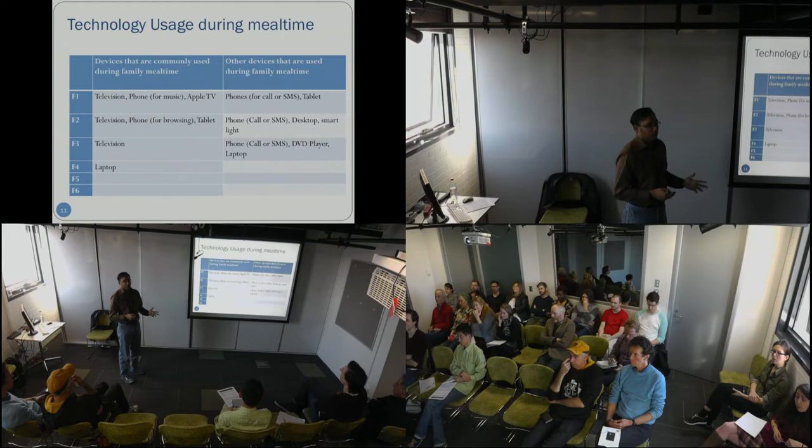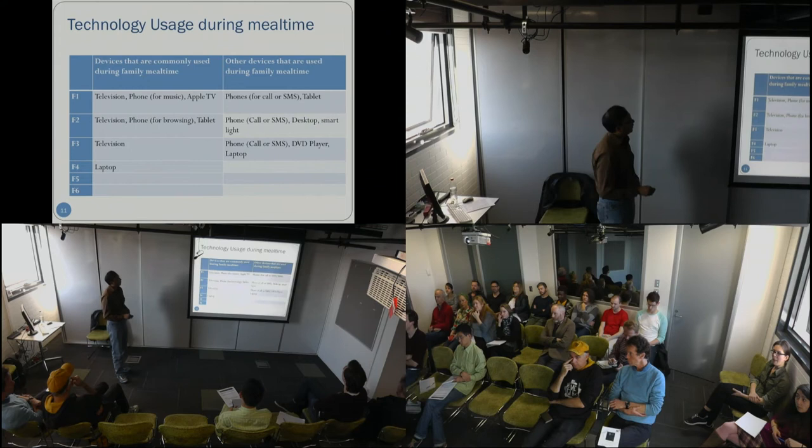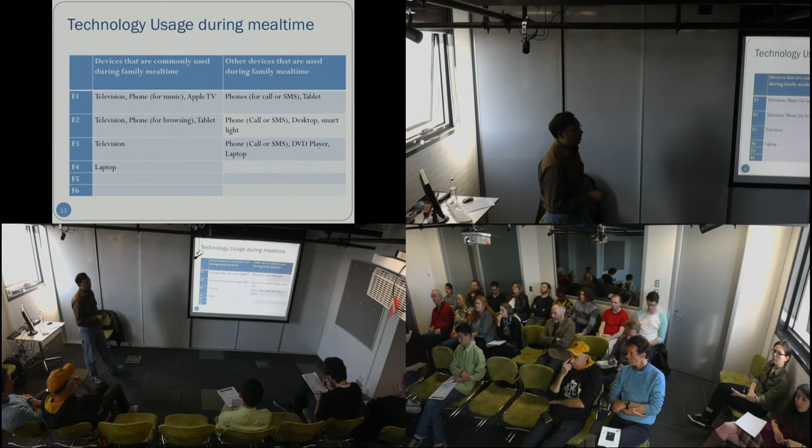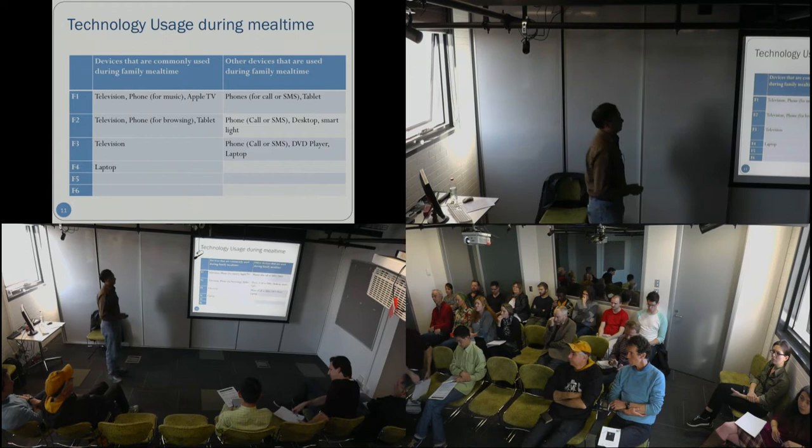Family 2 also has desktops and a special technology — smart lights that can be controlled using smartphones to create a special party environment. One column focuses on technologies generally used; another lists technologies seldom used during dining. We can see that television is the most common technology found during mealtimes, but there are other devices that also need to be discussed.